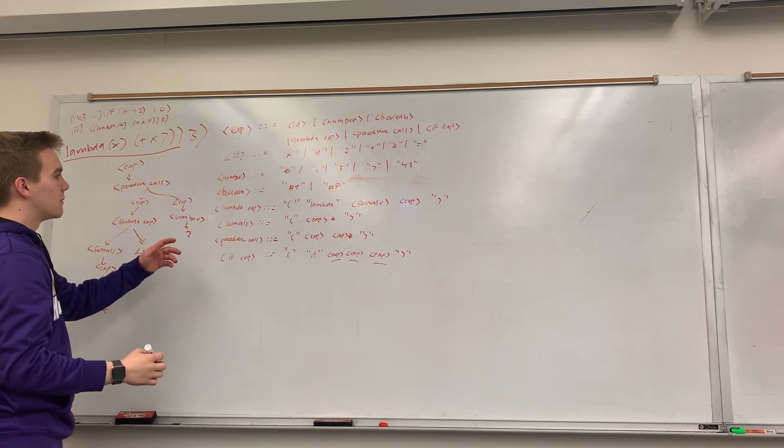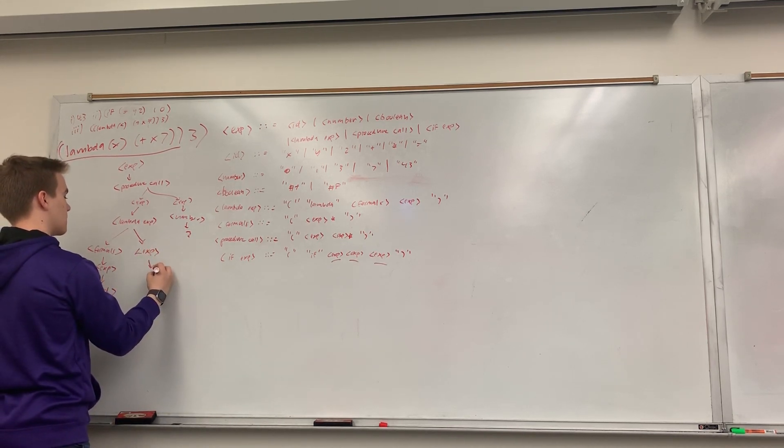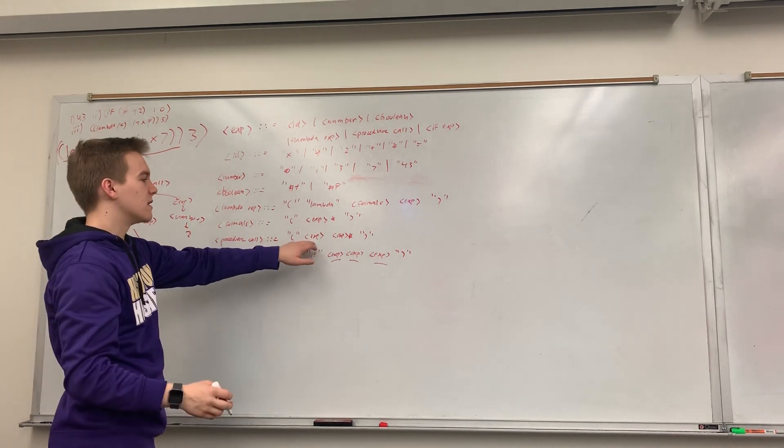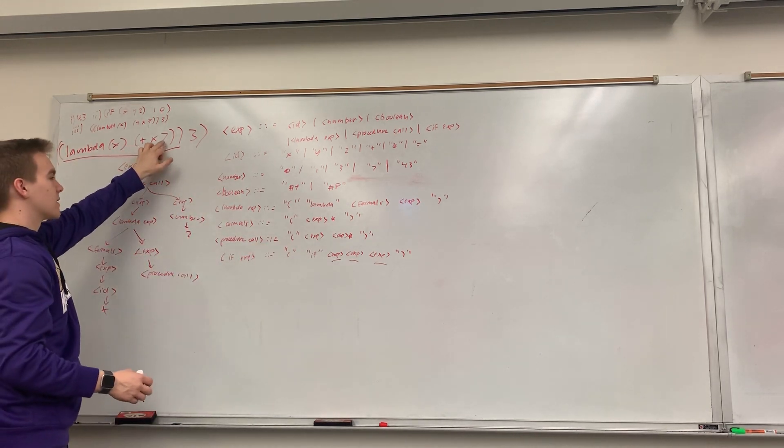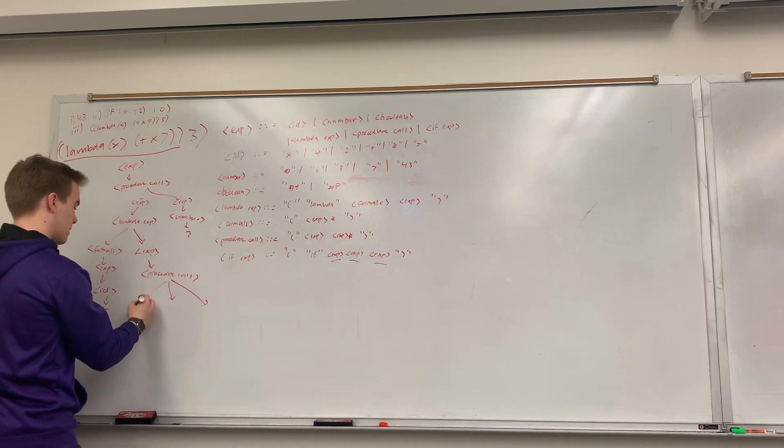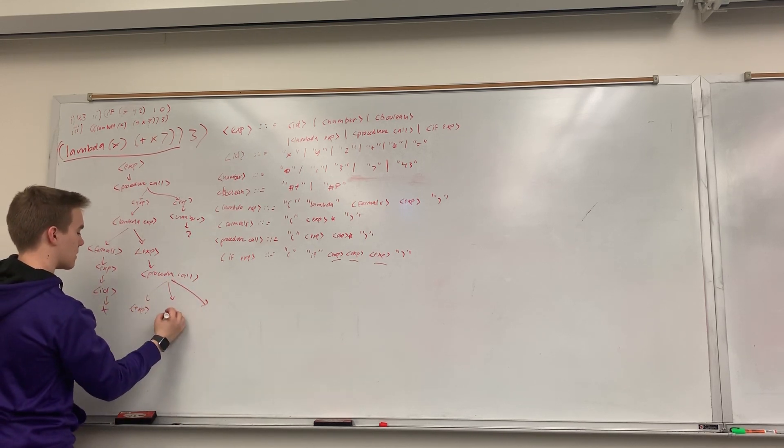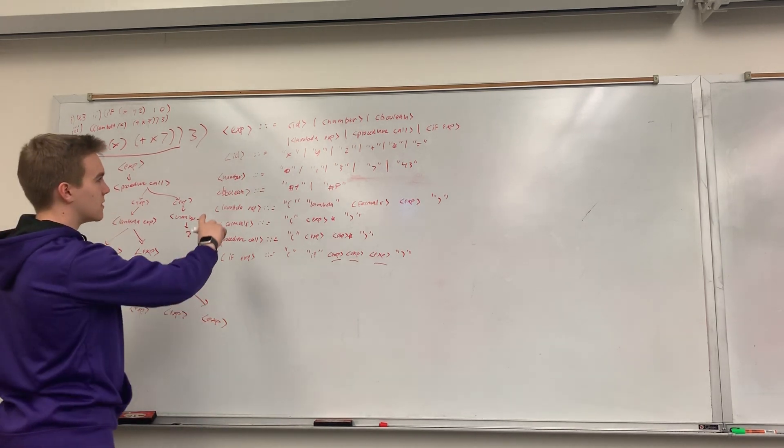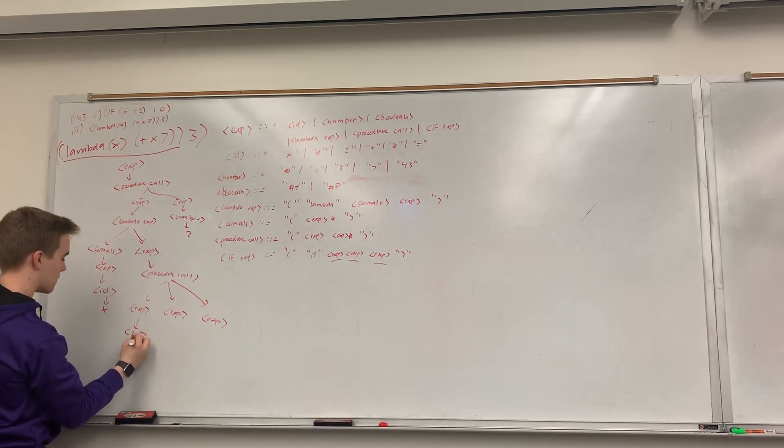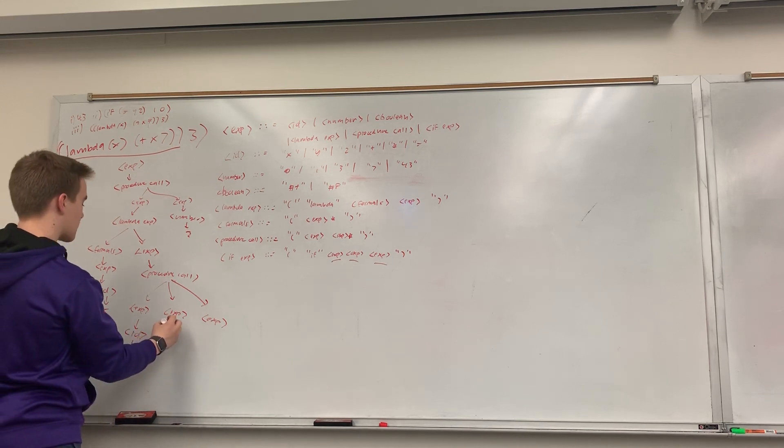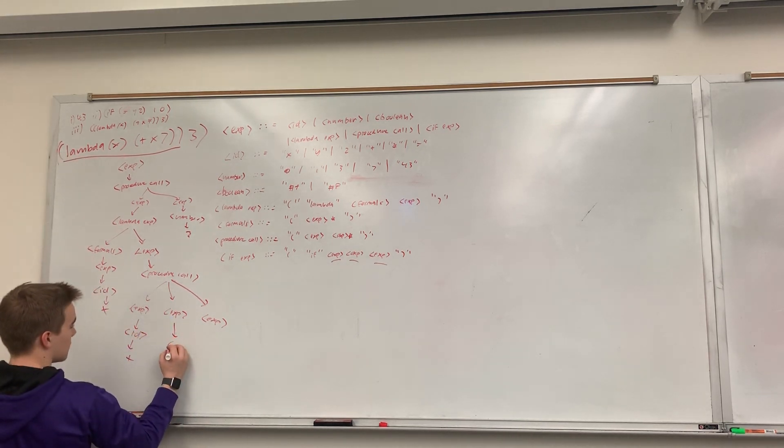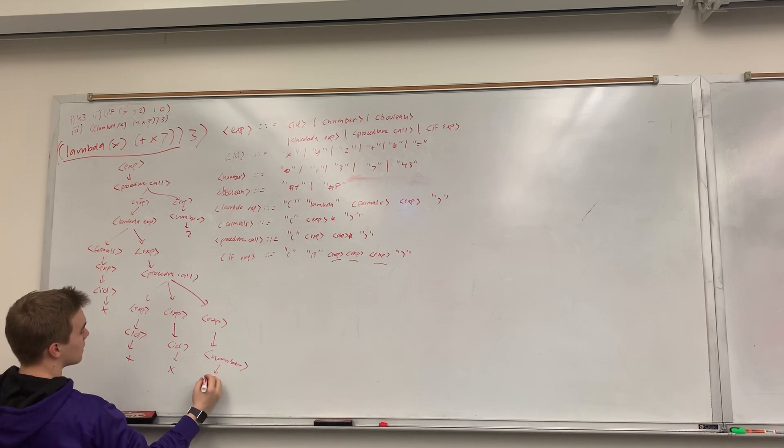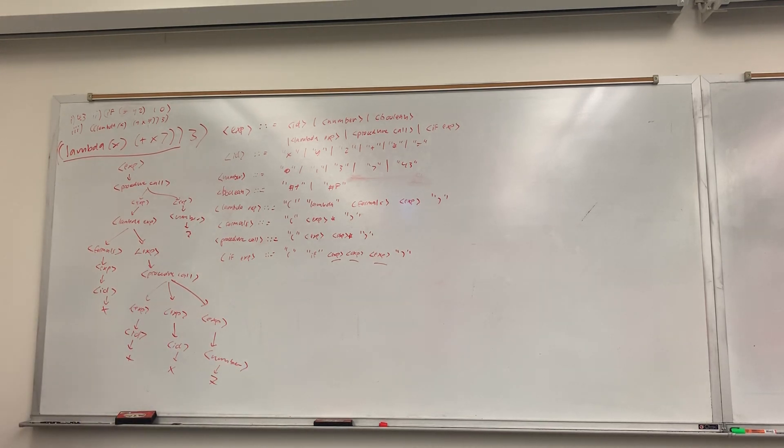Because, it calls a procedure call. Which asks for as many expressions as I want. At least one. I need three. One for the plus. One for the x. One for the 7. So, three expressions. One for the plus, which I get to from id. One for the x, which I get to from id also. And, one for the 7, which I get to from number. Okay. I think I did it. Is that all of five?